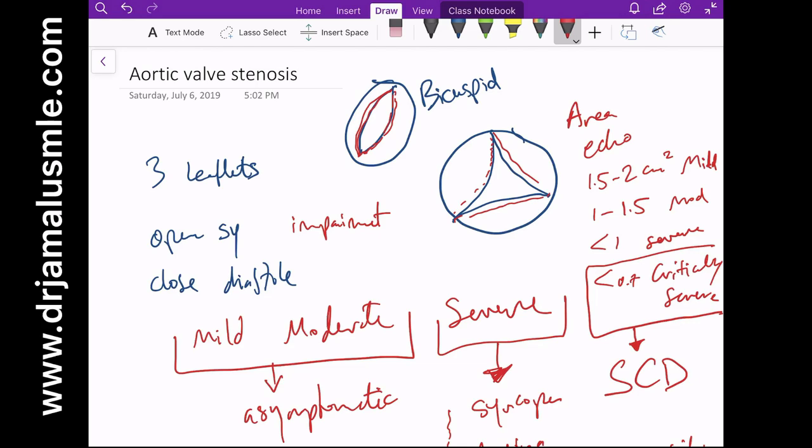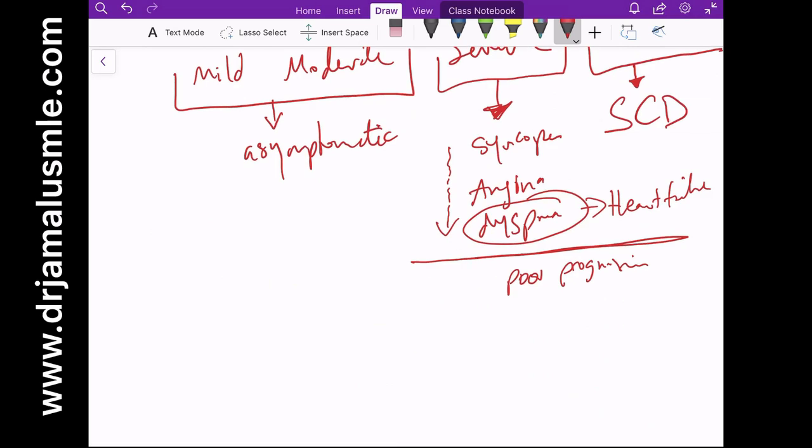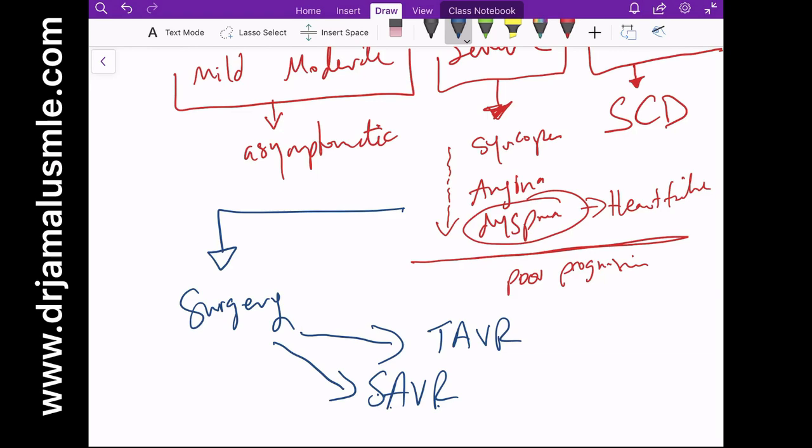How can we treat aortic valve stenosis? As we said, if the patient has severe aortic stenosis you refer them for surgery. Nowadays we have two options: one option is the SAVR, which is the surgical aortic valve replacement, and the other one is TAVR. TAVR stands for transcatheter aortic valve replacement, which is done through catheterization, while the SAVR is basically open heart surgery.